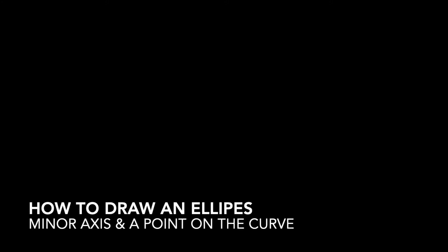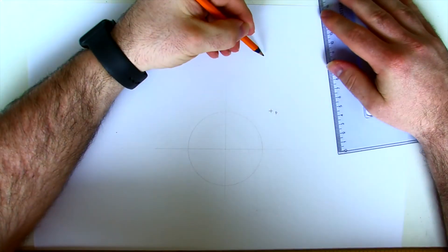A short video on how to draw an ellipse when you're given the minor axis and the minor circle plus a point on the curve. As you can see we've been given the minor axis, the minor circle is drawn and point P is located outside the minor circle.